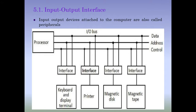Look at this diagram. Here we have the processor and a set of external peripherals. The processor and external peripherals can communicate using three types of buses — data bus, address bus, and control bus — along with the interface which is connected with every peripheral device.